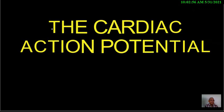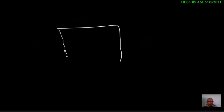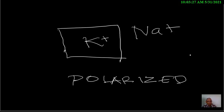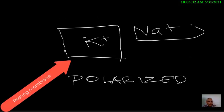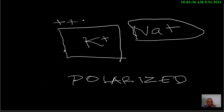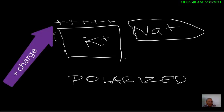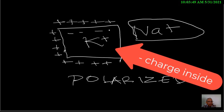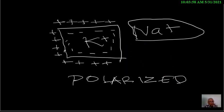If we take a look at a single cell in its resting state, it is characterized by a preponderance of electrolytes inside the cell, which include potassium and sodium. Sodium is predominantly on the outside of the cell. This is called the polarized or resting state. In this state, there are many positively charged ions on the outside of the cell compared to negatively charged ions on the inside.